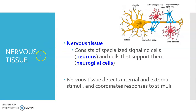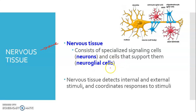The last animal tissue is nervous tissue. When we talk about nervous tissue, we relate it to the nervous system — our brain and spinal cord. The nervous tissue consists of specialized signaling cells called neurons, and cells that support the neurons called neuroglial cells. The general function of nervous tissue is to detect internal and external stimuli and coordinate responses to those stimuli.